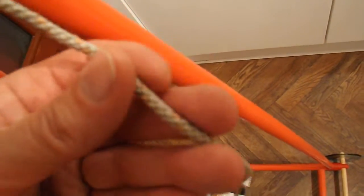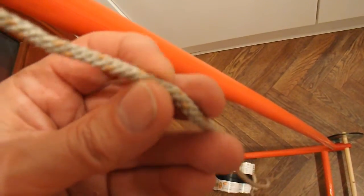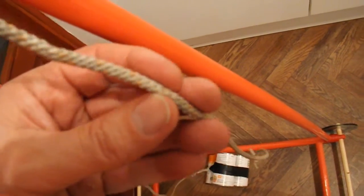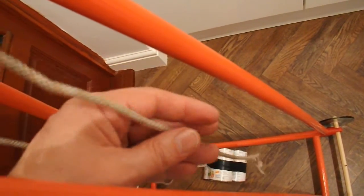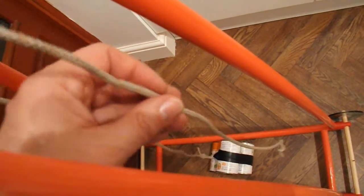The string is sash line. It's quite strong stuff this actually. It's the sort of stuff you would use in old fashioned windows that had weights to counterbalance them for lifting the windows up and down.